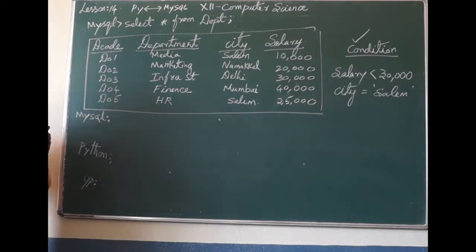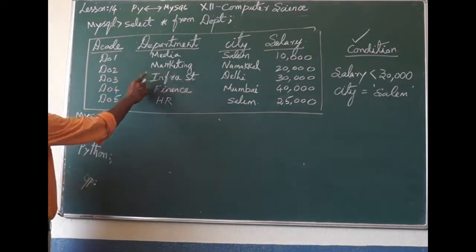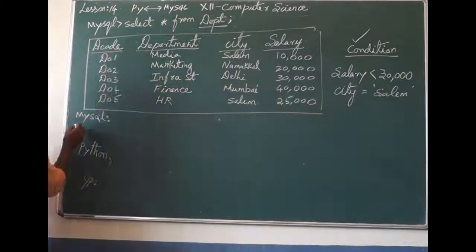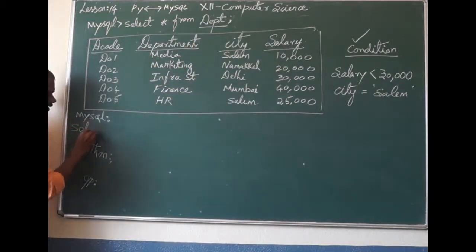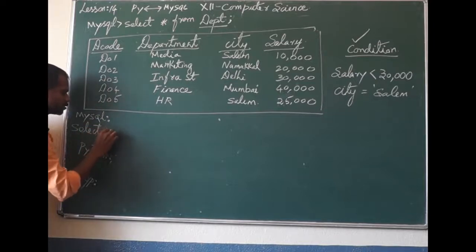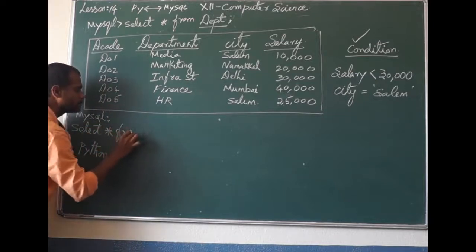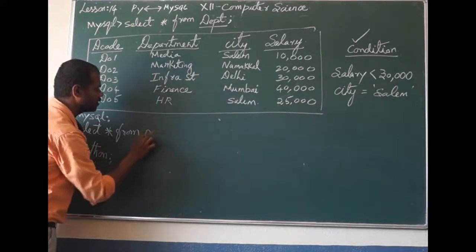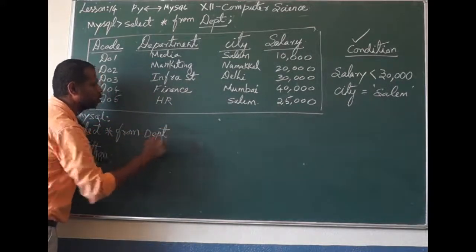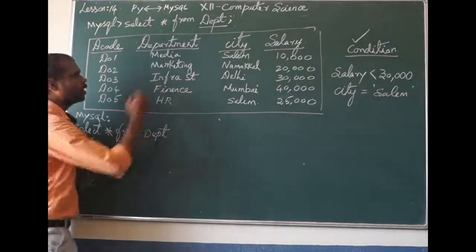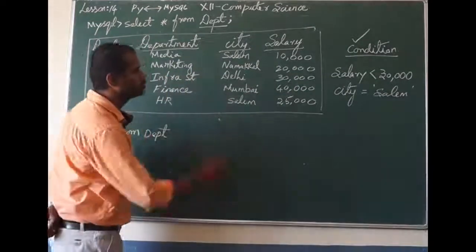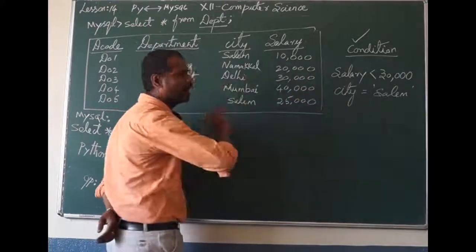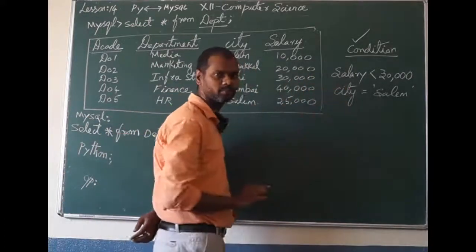What is the MySQL command? The table name is 'dept'. So the command is: SELECT * FROM dept. Then, what is the condition? Condition A: salary should be less than 30,000, and the city should be equal to Salem.